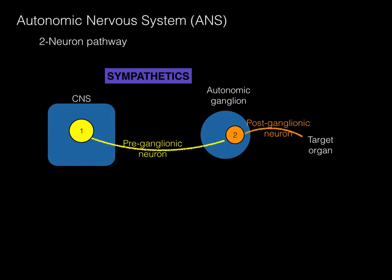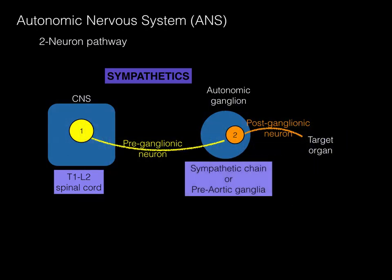For sympathetics specifically, the CNS origin is always between the T1 and L2 spinal cord levels. This is because sympathetics primarily innervate smooth muscle of arteries, and the yolk sac and the development of those original arteries is right along the front of the T1 to L2 region of the spinal cord. The cell bodies of the second neuron will either be in the sympathetic chain or the pre-aortic ganglia.